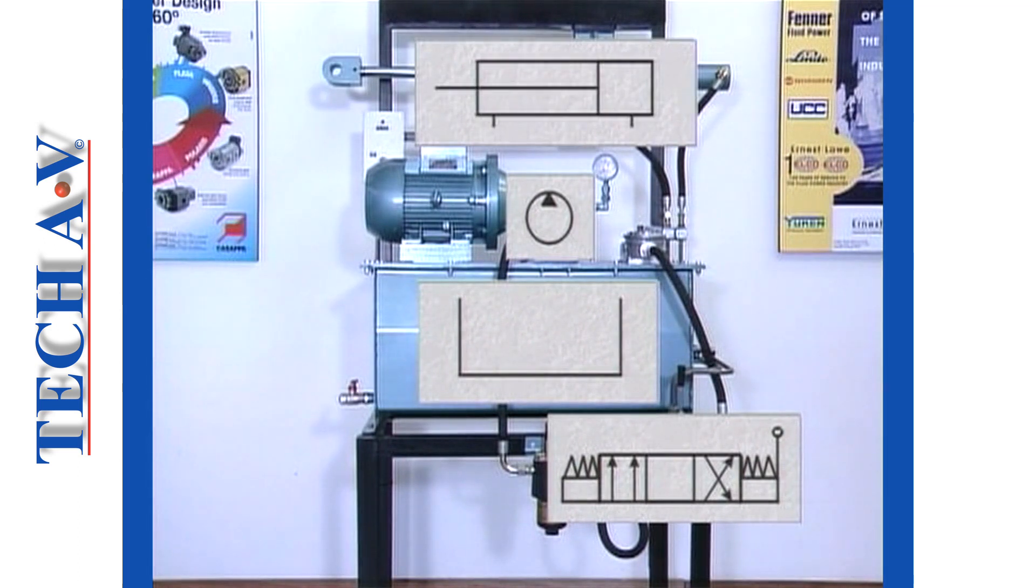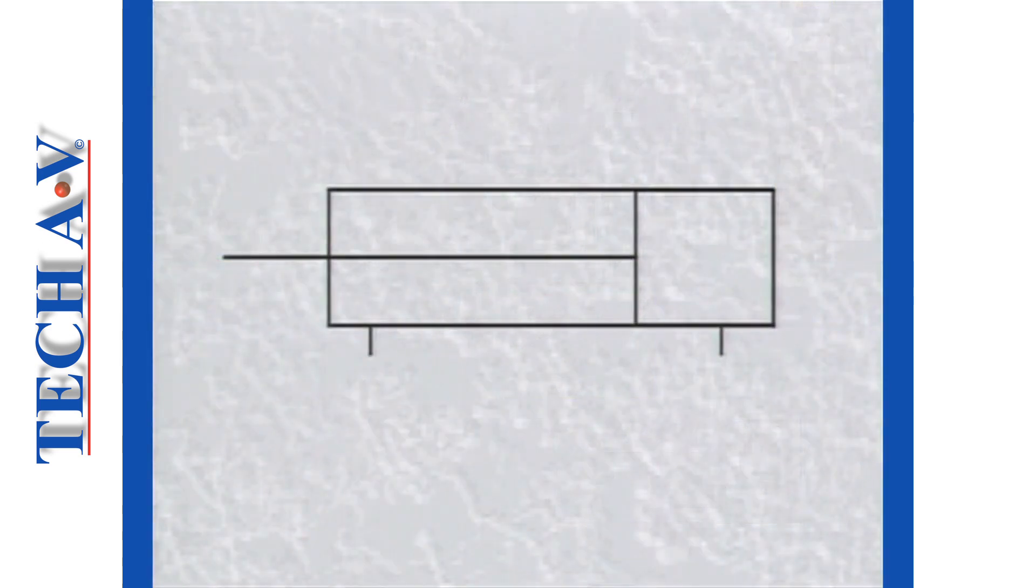A double-acting cylinder receives input, or flow, on either side of its piston. The two input connections are indicated on the cylinder symbol.